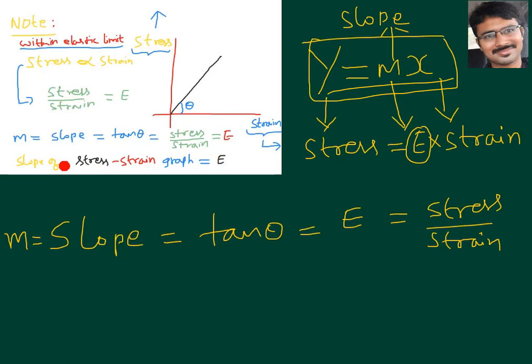That is the information related to the stress-strain graph under the elastic limit. The graph is a straight line and the slope of the stress-strain graph gives us the modulus of elasticity.